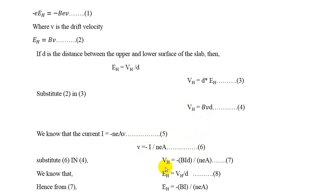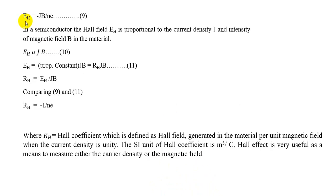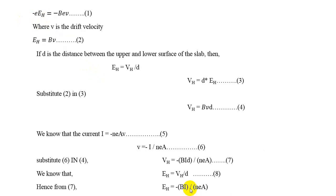Substituting V = minus I / (N·e·A) into equation 4, we get V_H = minus V·I·D / (N·e·A). We know E_H = V_H / D, so substituting this we get E_H = minus V·I / (N·e·A). Since I/A = J (current density, defined as current divided by area of cross section), we obtain E_H = minus J·B / (N·e).